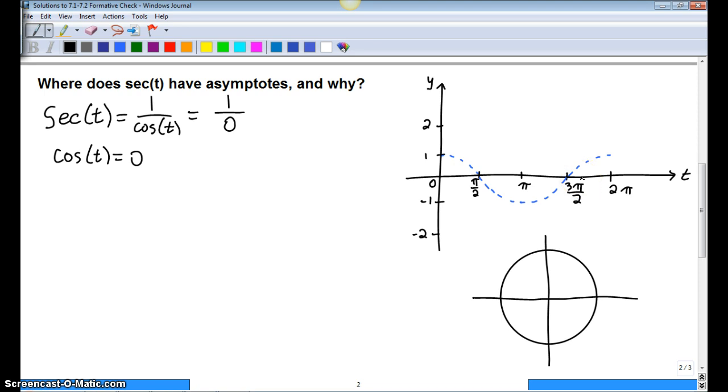So really, in answering the question where does secant have asymptotes, we're really asking cosine equals 0. So your answer becomes π/2, 3π/2.